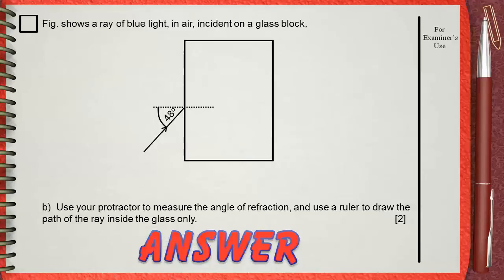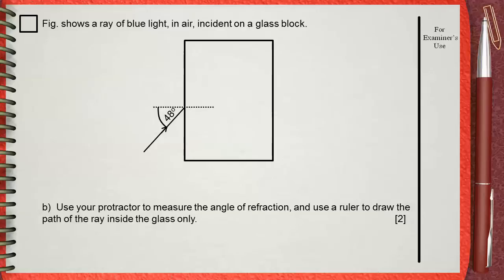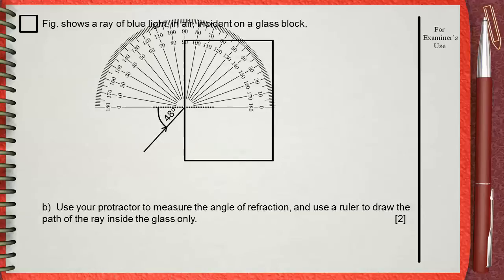Remember that we put our protractor on the normal. The most important thing in drawing this is the orientation of your protractor. Remember that we said before that the 0-180 line must be on the normal, not on the surface.